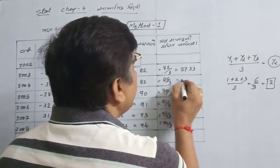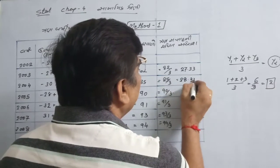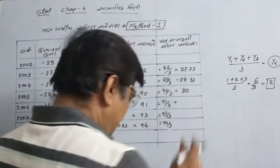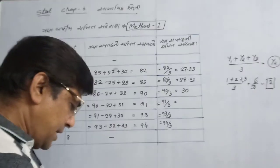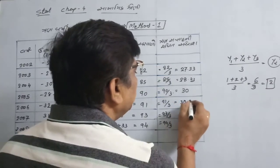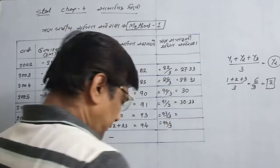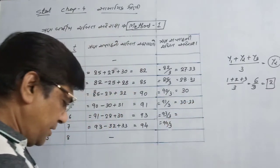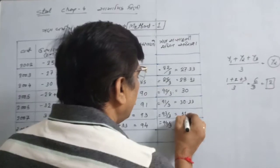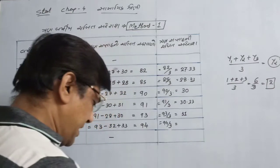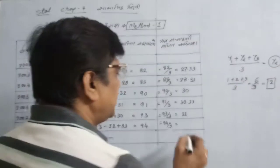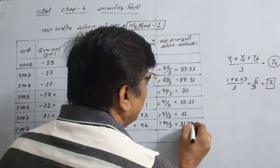90, 30, 91, 30, 30, 33, 93, 93, 3, 31, 94, 3. Result: 31.33.